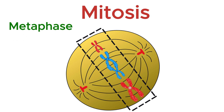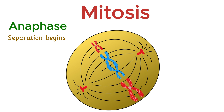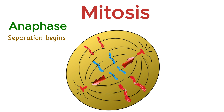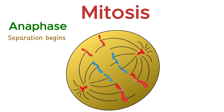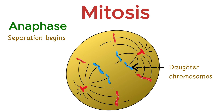After the careful alignment in metaphase, the cell now enters the third stage of mitosis: anaphase. This is the stage where separation begins. During anaphase, the centromeres — the point where sister chromatids are joined — split apart. As a result, each sister chromatid is pulled away to opposite poles of the cell. The spindle fibers attached to the kinetochores begin to shorten, dragging the chromatids, now called daughter chromosomes, toward each side. This ensures that each new cell will receive an identical set of chromosomes.